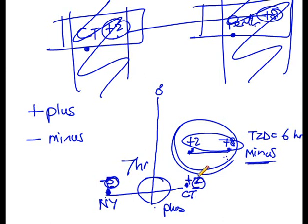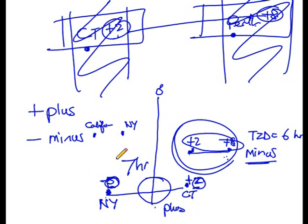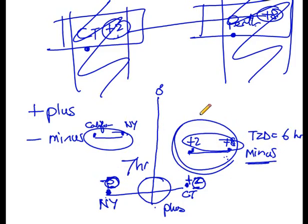Another example: let's say the two places are New York and California. New York is on the western side of the Greenwich Meridian, and California is also on the western side. Draw your two dots, connect them, and you see a minus sign — so you subtract the two time zones from each other to get the time zone difference. That's it for now. If you don't understand it the first time, just watch the video again. We'll catch up in subsequent videos — thank you.